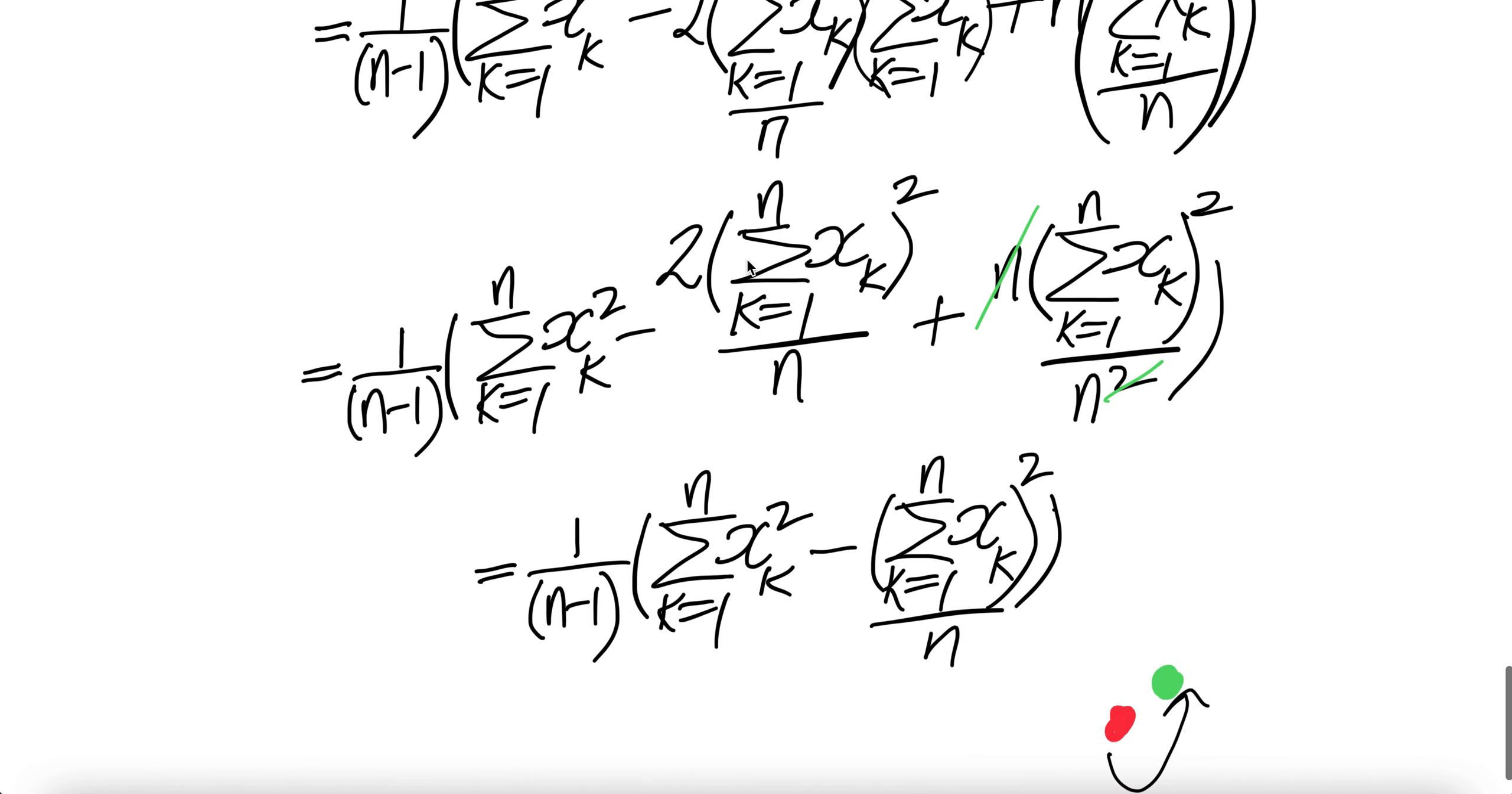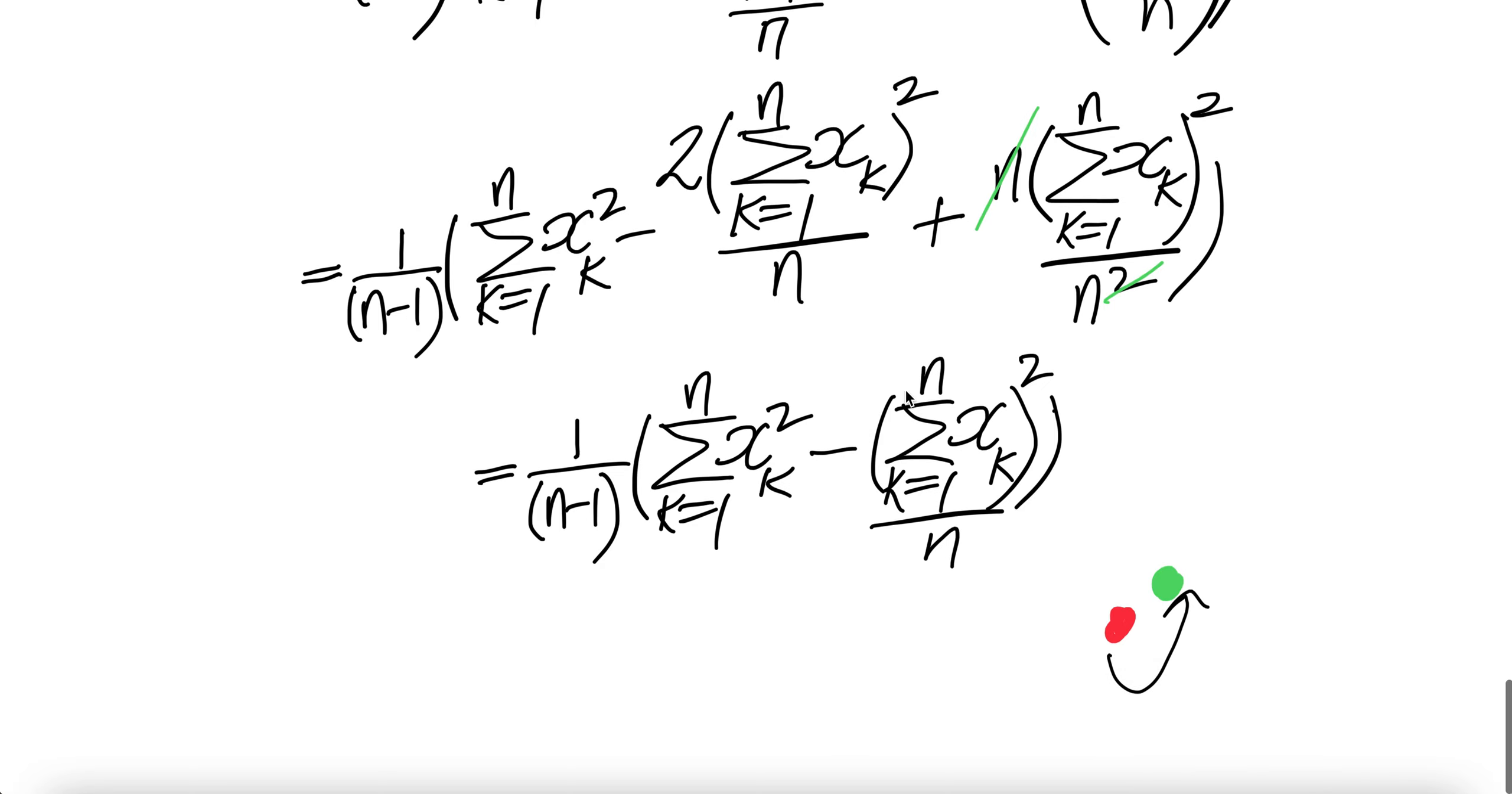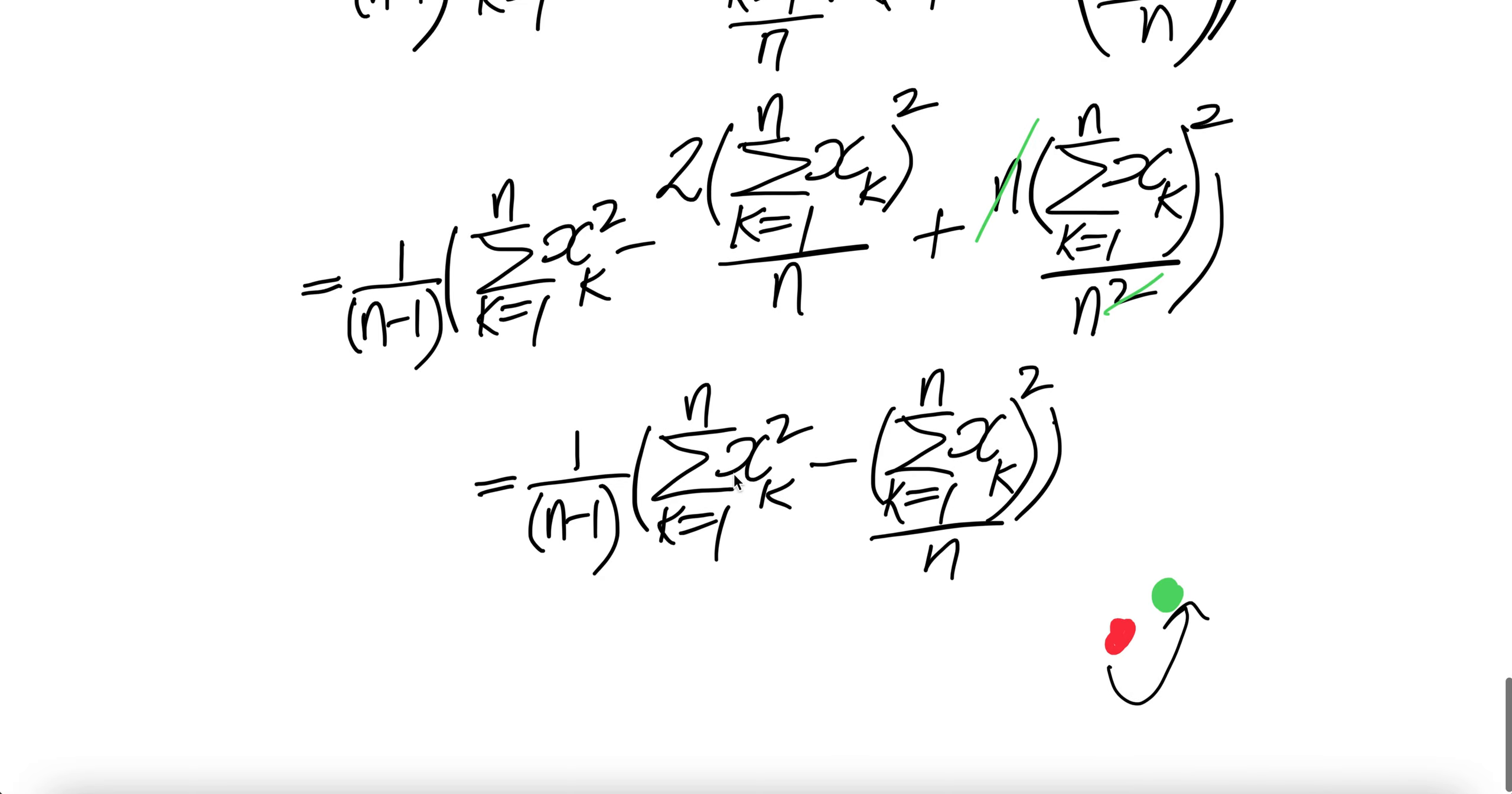Now, you have two of negative two of this, and one of that. So finally you have minus one of this. Then don't forget this whole thing is here. You have to divide by n minus 1. Done.